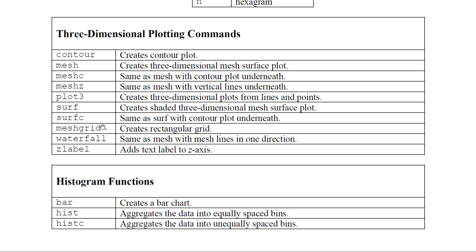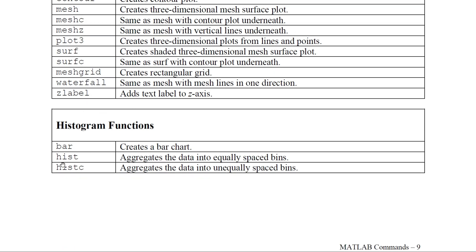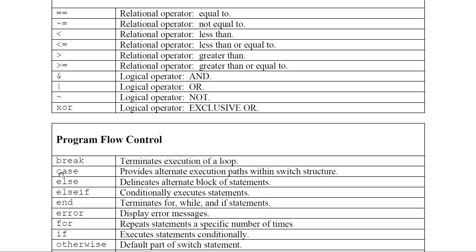For histograms use bar, hist, or histc. Logical and relational operators: == checks equality (not assignment), ~= is not equal, < is less than, <= is less than or equal to, > is greater than, >= is greater than or equal to. Logical operators are AND, OR, NOT, and XOR.